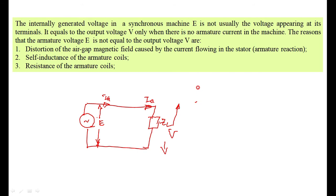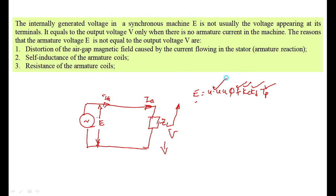The generated voltage E is given by E = 4.44 × F × KC × KD × T × phi. For a particular machine, the number of turns T is constant, KC (pitch factor) is constant once the coil is wound, KD (distribution factor) is fixed once the winding is wound, and the frequency F is fixed. Therefore, E is proportional to phi. If phi varies, the generated voltage also varies.